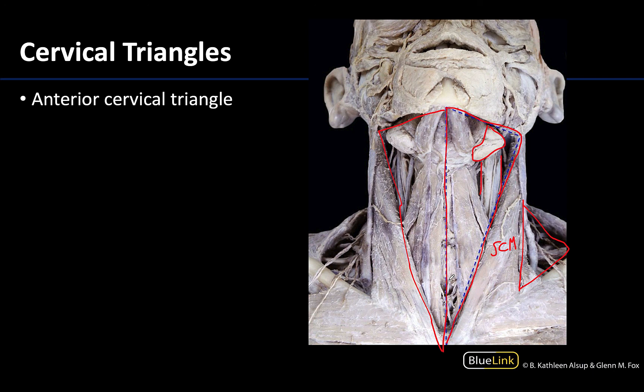Those are the structures you need to be able to identify and understand the pertinent anatomical relationships for this session. Anything on the list of structures is fair game for a practical assessment, so make sure you review these and get a good idea of how you'll identify them. If there are any areas that need further clarification, feel free to reach out to me or any of my anatomy colleagues — we love talking anatomy and we love talking to you students. Thanks for your time and attention, and have a great day!